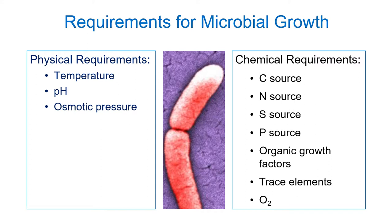There will be other organic growth factors that might increase the rate at which the bacterium can grow. We have trace elements — things like iron and magnesium — that are needed by cells in small quantities. And oxygen, which may be something the cell requires if it's aerobic, or it may damage the cell if the cell is anaerobic.